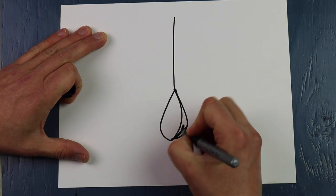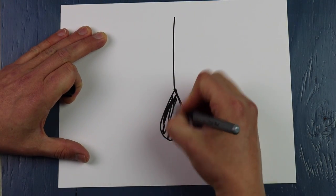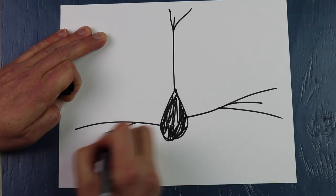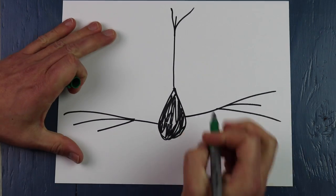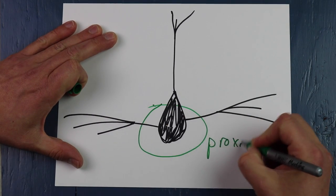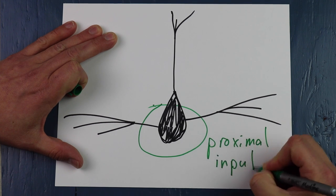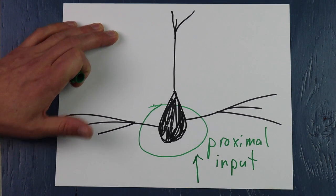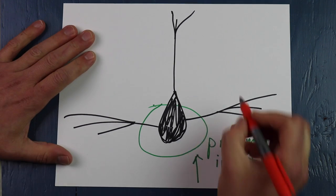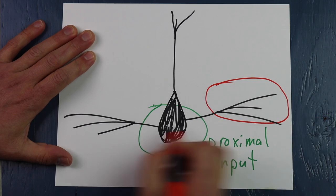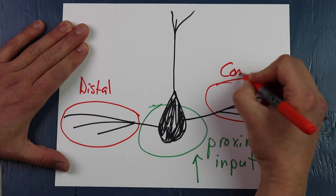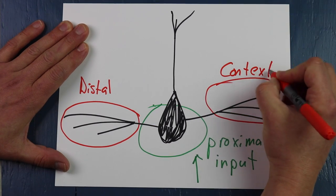So how does this look on the cell body itself? The cell body or the soma has got different areas of receptivity. The feed forward proximal input comes from below and the contextual information or the distal connections come laterally from other